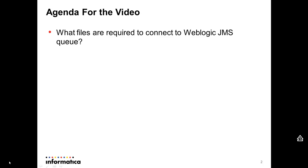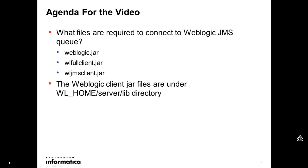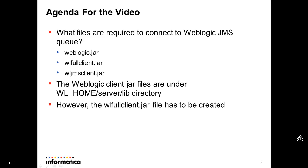The agenda for today is: what files are required to connect to WebLogic JMS queue? There are three files: weblogic.jar, WLFullClient.jar, and WLJMSClient.jar. These files are available under the WebLogic home server lib directory — all of them except WLFullClient.jar, which has to be created. I'm going to show you the steps to create this file.